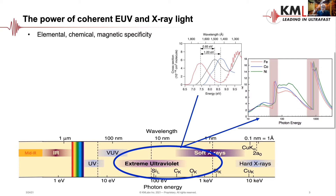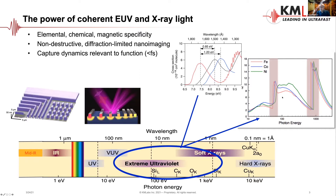This has to do with the fact that this is ionizing radiation — ionizing from specific subshells in an atom. For example, on the right you can see the absorption coefficient for iron, cobalt, and nickel. Each one of them has an absorption edge in both the EUV region and the soft X-ray region of the spectrum.